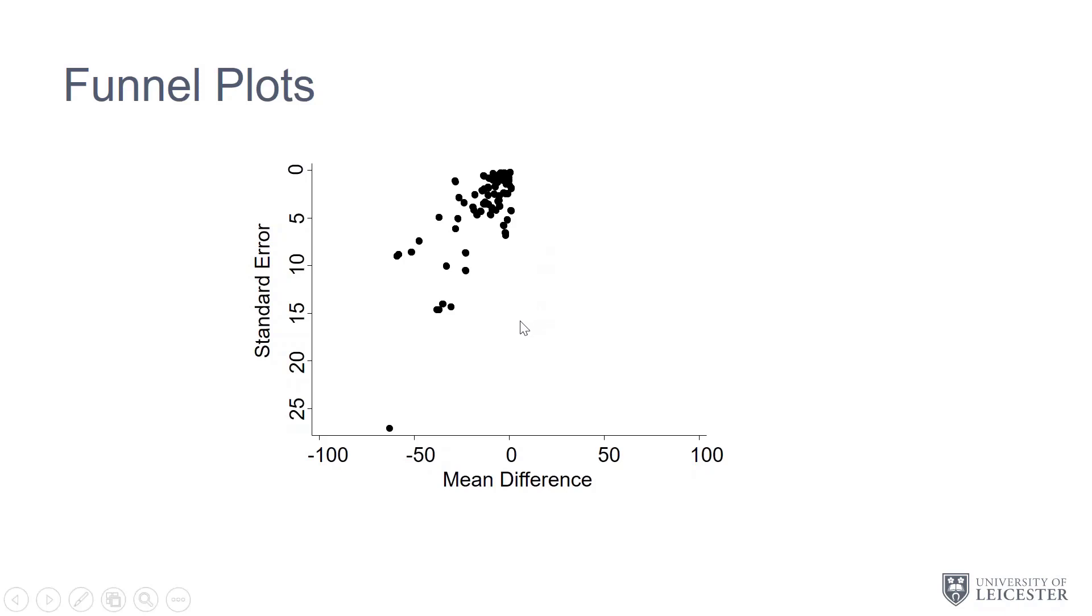What we can do is add the regression line and the confidence intervals from Egger's test. So the regression line is this line in the middle, and then the 95% confidence intervals either side.